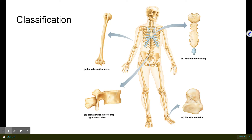Long bones contain hollow sections that are filled with yellow marrow, used for fat storage. The heads of the big long bones — like the humerus in the upper arm and the femur in the leg — also contain red marrow.